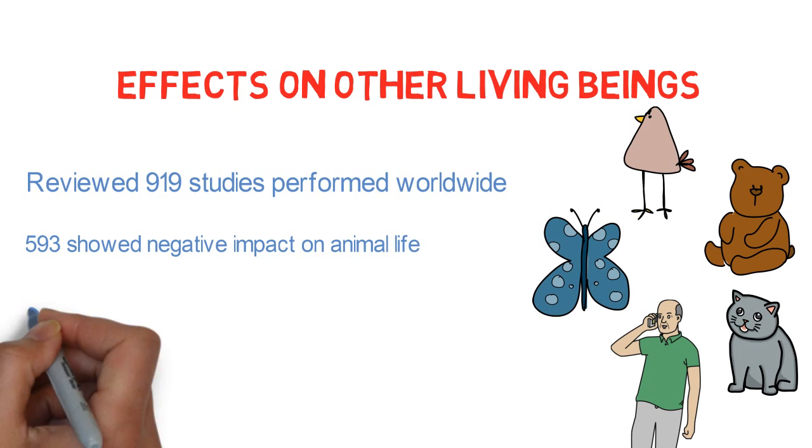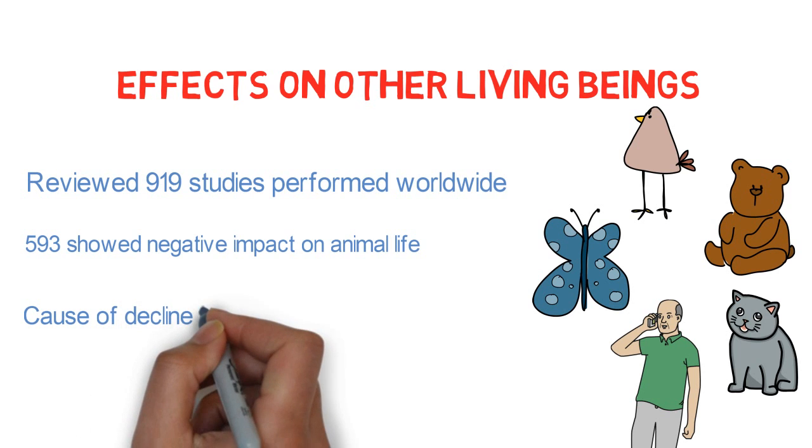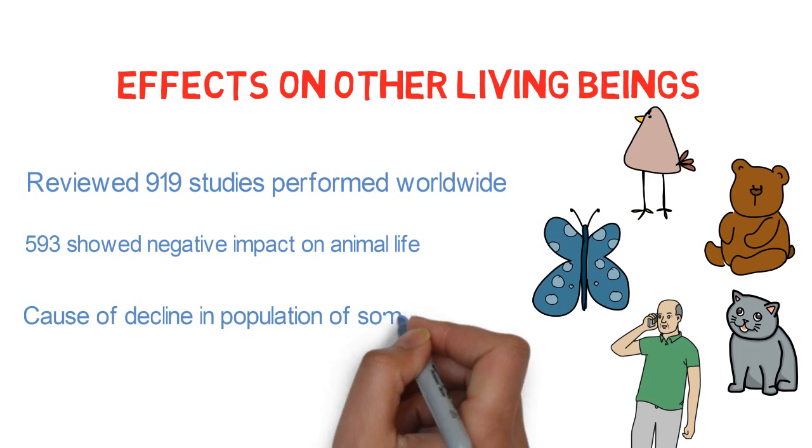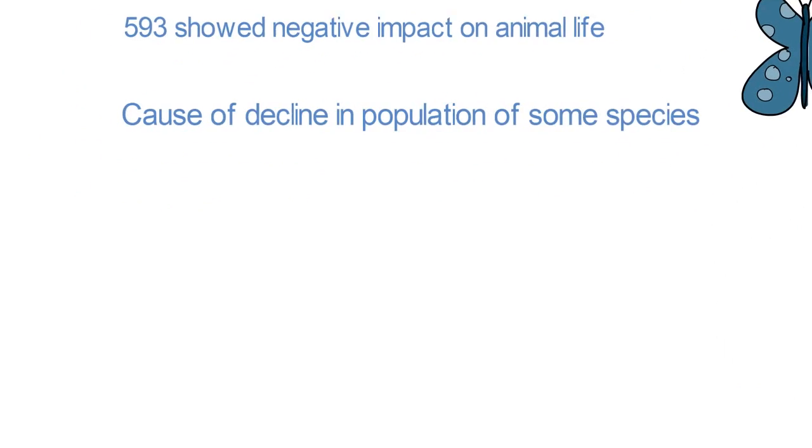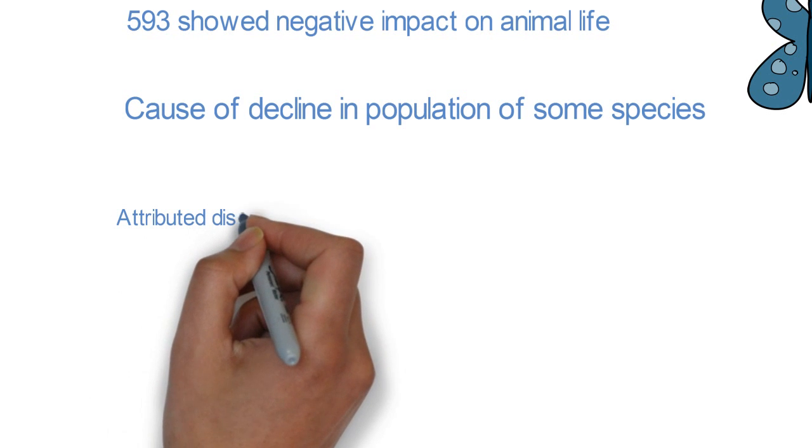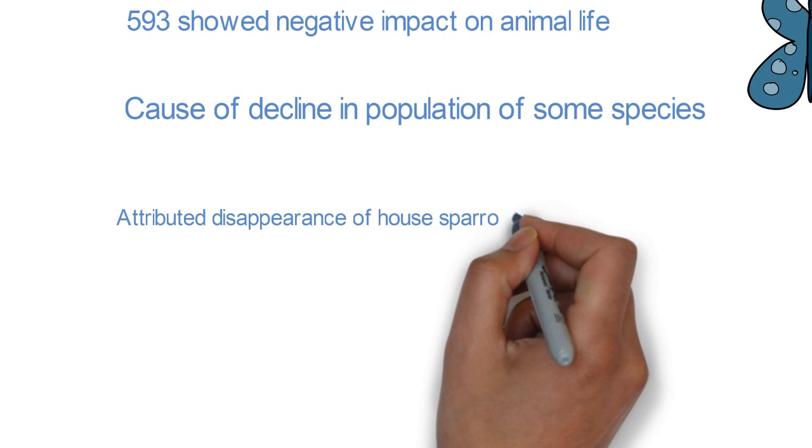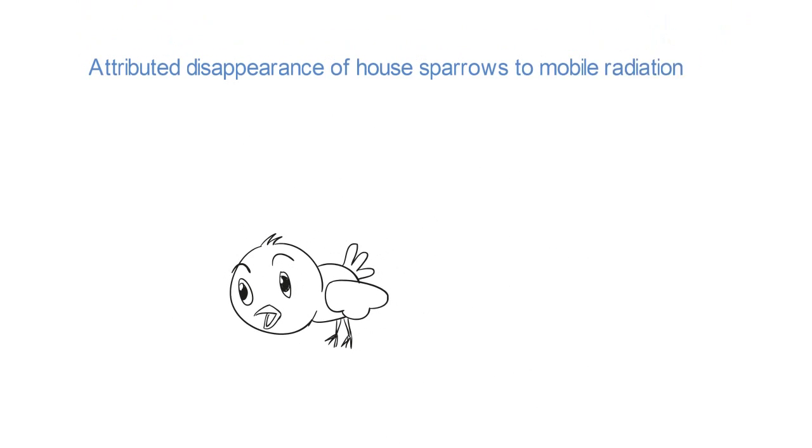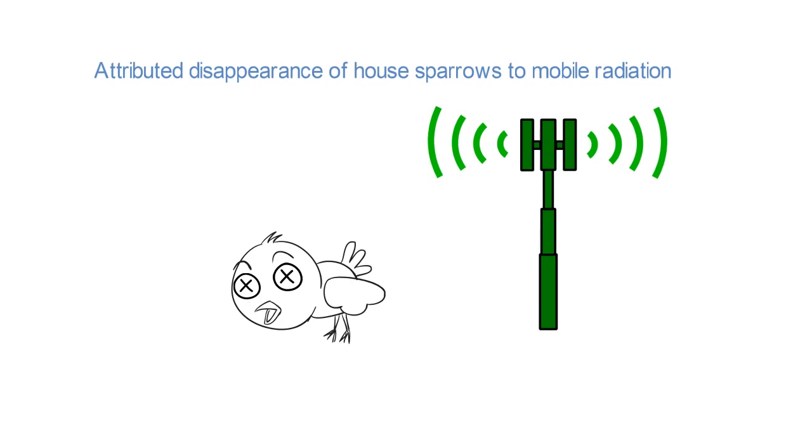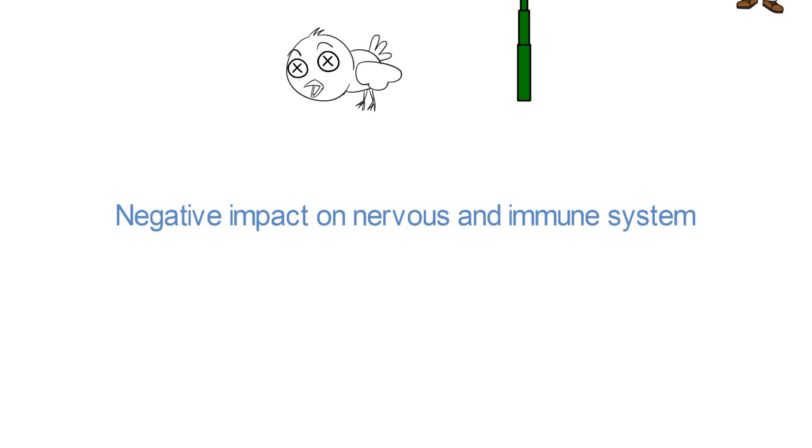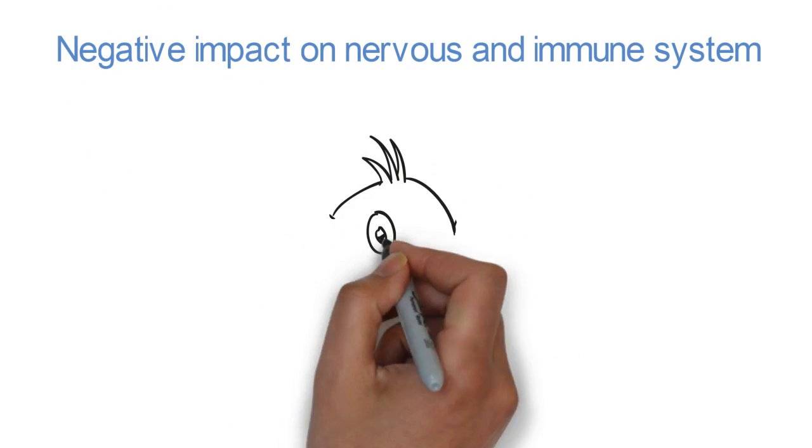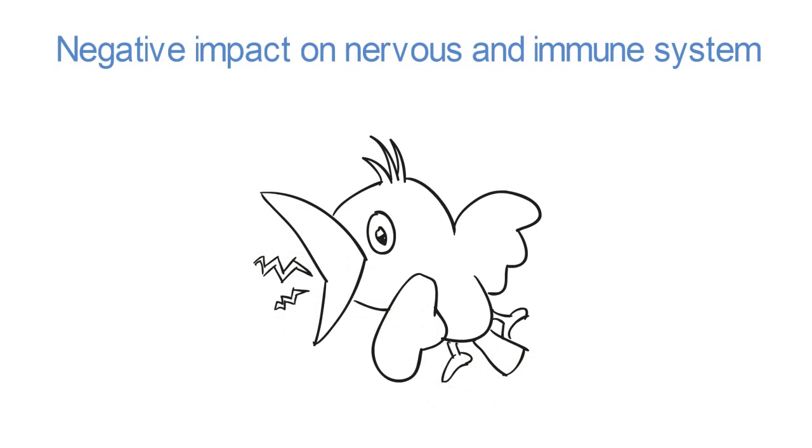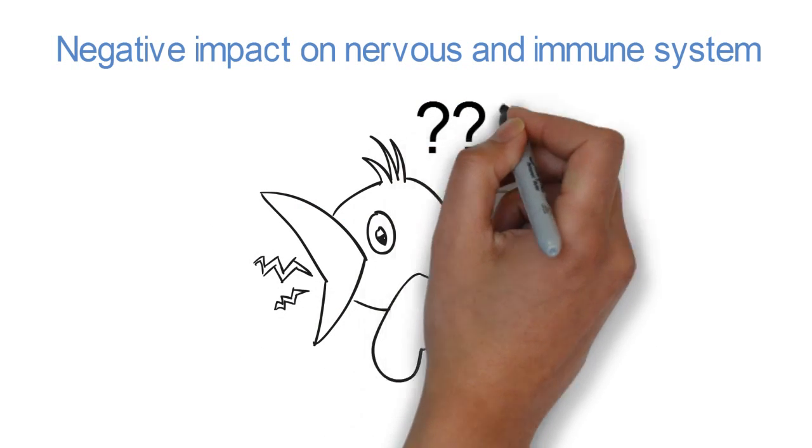They also held it responsible as a possible cause of decline in population of some species. In 2014, an environmental science experts team attributed disappearance of house sparrows in Indian cities to mobile radiation. According to them, long-term exposure to mobile radiation has damaging effects on the nervous and immune system of small animals. Also, many species use magnetic navigation and mobile radiation can interfere with their sensors and misguide them while navigating and preying.